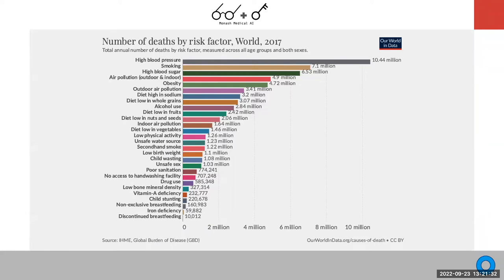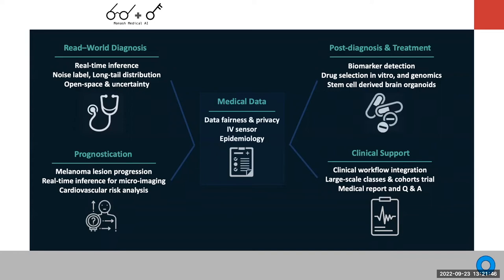Looking at which diseases affect the most people globally — high blood pressure, smoking, high blood sugar — the main killers for cardiovascular disease. Many are chronic diseases, not acute conditions you can simply diagnose. We divide our research into four directions: first, real-world diagnosis, handling problems like real-time inference, noise, long-tail distribution of rare diseases, open-set and out-of-distribution problems, and uncertainty quantification. For chronic diseases, prognosis is critical — understanding when disease will occur and how it will progress over the next two to four years; melanoma lesion progression is a key case study.